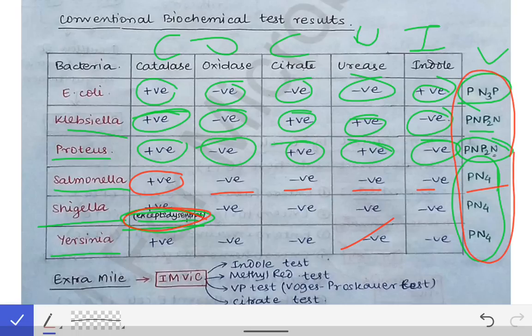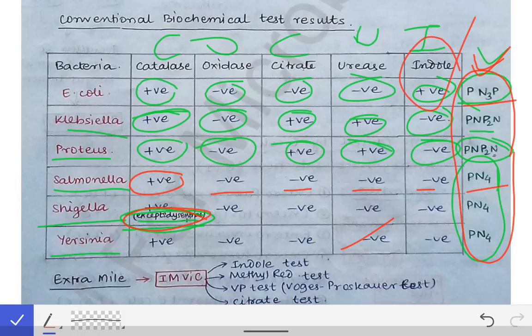So by remembering just these COCOY scores — PN3P for E. coli, PNP2N for Klebsiella and Proteus, and PN4 for Salmonella, Shigella, and Yersinia — you will remember all test results without mistakes. This also helps in exams when asked for examples, such as: oxidase negative bacteria (E. coli) or indole positive bacteria (E. coli), using just the PN3P pattern.